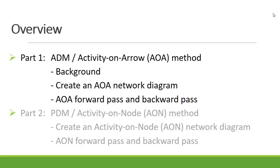In this video, I'll be discussing the background of the activity on arrow, we'll create an activity on arrow network diagram, and then we'll do the forward path and backward path on that diagram. In part 2, we will create an activity on node network diagram using the same example, and then do the forward path and backward path on the activity on node network diagram.